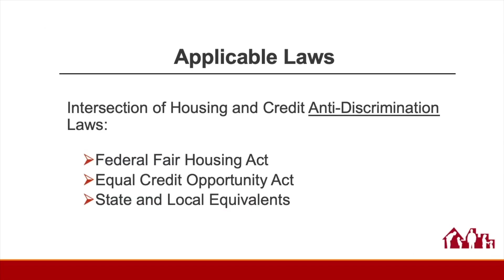Today we're talking about fair lending. Lots of laws apply to credit transactions, and we're not talking about most of them here. We are a fair housing organization, so when we think about fair lending, we're really focused on anti-discrimination laws as they apply to mortgage transactions. At the federal level, that's the Fair Housing Act, which applies to housing transactions like getting a mortgage, and the Equal Credit Opportunity Act, often referred to by its acronym ECOA, which applies to credit transactions, also like getting a mortgage. There are equivalent laws at the state and local levels that can come into play, but in this presentation we're principally focusing on the federal laws.